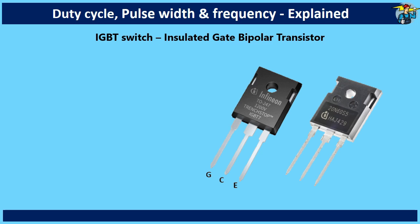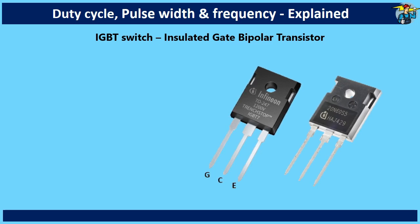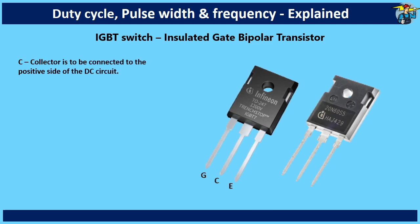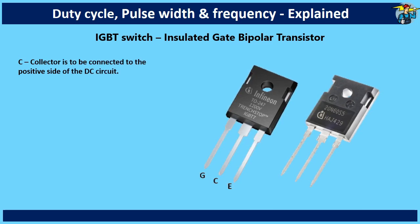IGBT stands for insulated gate bipolar transistor. Out of the three pins on it, C is the collector and is to be connected to the positive side of the DC circuit.